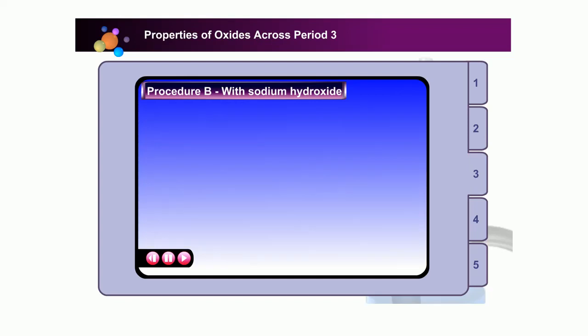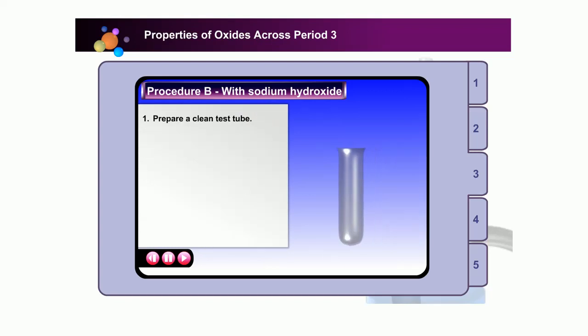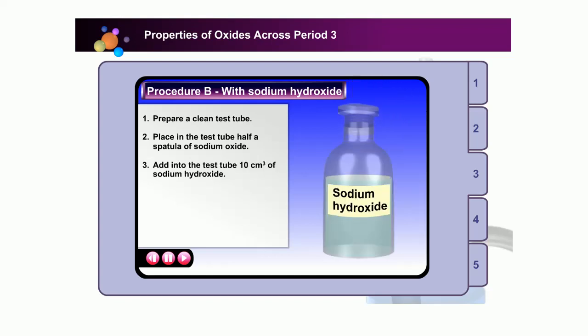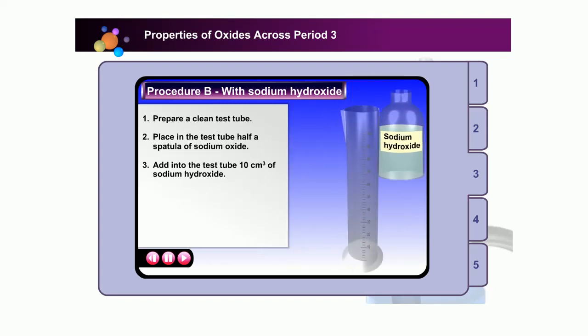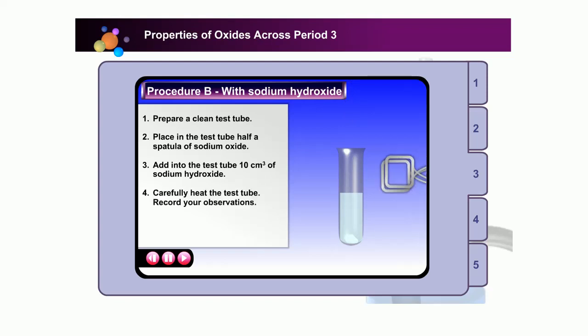Let's investigate the reaction of period 3 oxides with an alkali. First, prepare a clean and dry test tube. Place half a spatula of sodium oxide in the test tube. Then, add into the test tube 10 cubic centimeters of sodium hydroxide. Handle the test tube with a test tube holder and carefully heat the mixture. Remember, do not boil the mixture. Is sodium oxide soluble in a warm sodium hydroxide solution? Is there any change in color?